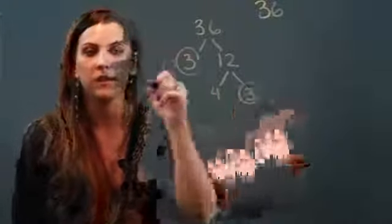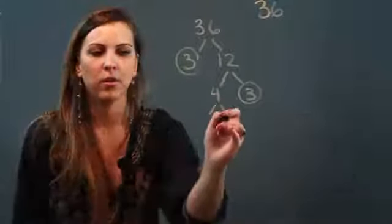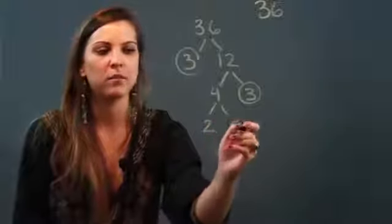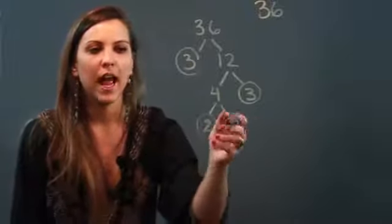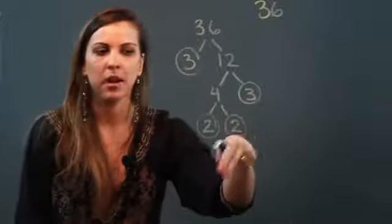3 is prime so I'm circling that. I'm going to go ahead and break down 4 further, so 4 can be broken down into 2 and 2. These are both prime so I'm going to circle them both. Now that I'm done breaking it down, all the ends of my branches are circled because they're prime.